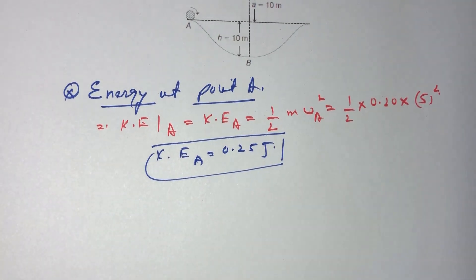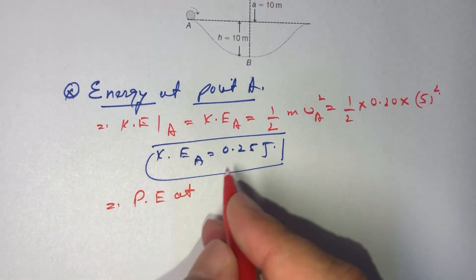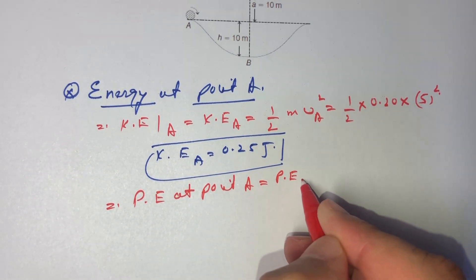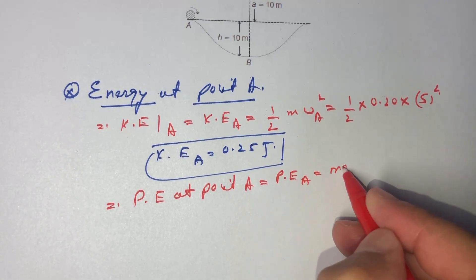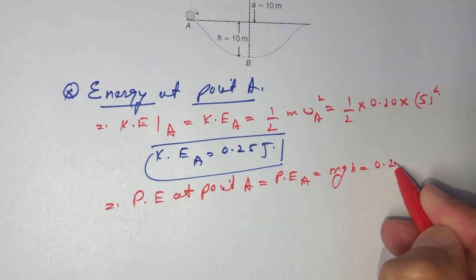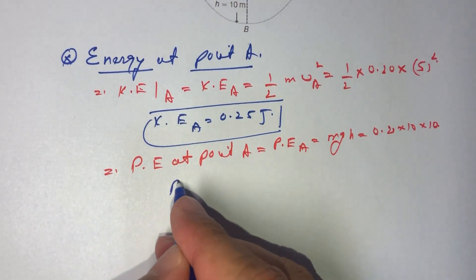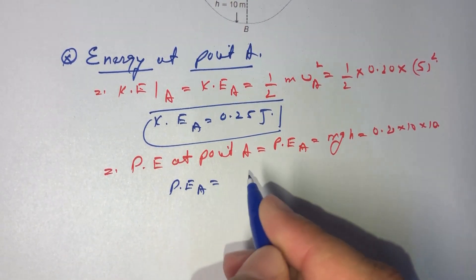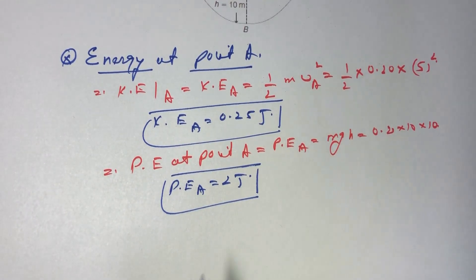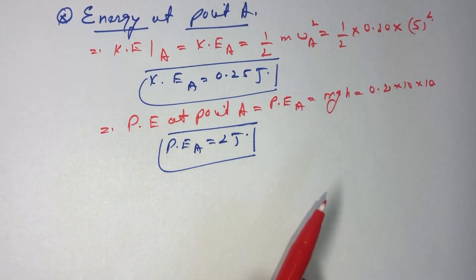Similarly, we find the potential energy at point A. Potential energy at A equals mgh, where mass is 0.20 kg, g is 10, and height h is 10 meters. Therefore, potential energy at A equals 0.20 times 10 times 10, which gives us 2 joules. So the total energy at point A will equal kinetic energy plus potential energy.